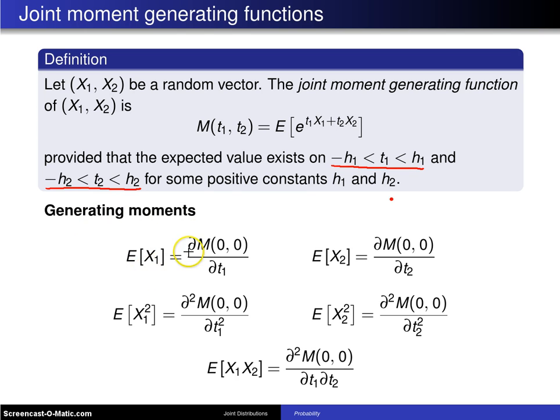The expected value of x1 is the partial derivative of the joint moment generating function with respect to t1, and then 0, 0 is plugged in. The expected value of x2 is the partial derivative of the joint moment generating function with respect to t2, and then again 0, 0 is plugged in.